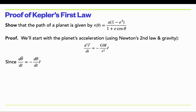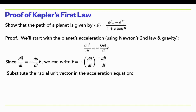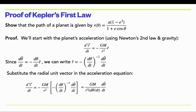We can write the time derivative of the θ̂ unit vector in terms of the r̂ unit vector. Solving for r̂ in terms of dθ̂/dt — dividing through by negative dθ/dt — gives r̂ = minus one over (dθ/dt) times dθ̂/dt. Substituting this expression for r̂ into the equation of motion, the acceleration of the planet is −GM/r² times that expression, which is a complicated way of writing the r̂ unit vector.